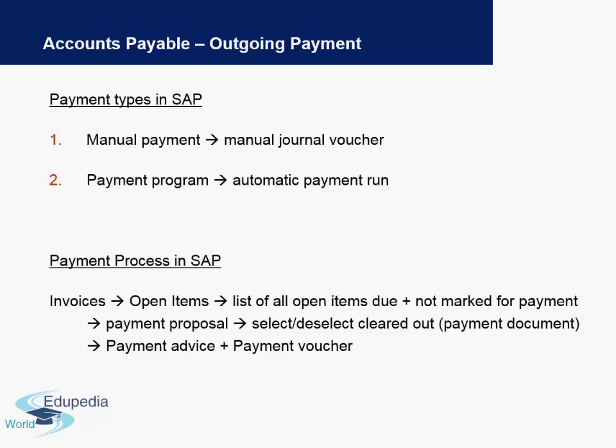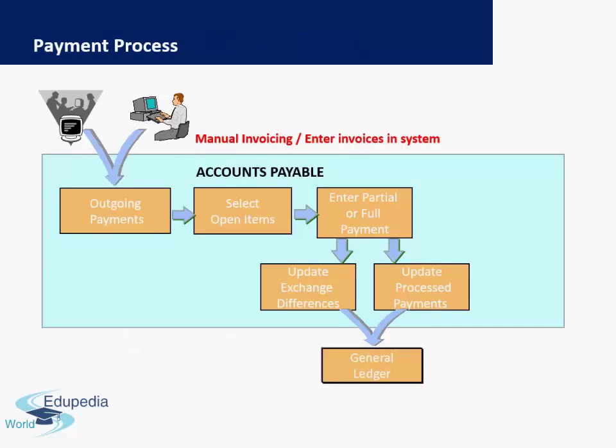When invoices are already posted, these become open items, as seen in earlier videos while viewing the vendor list display. The list of open items which are due and not marked for payment convert into a payment proposal. Here you get the option of selecting or deselecting specific documents to pay, and finally a payment invoice and payment voucher are created. This is a summarized payment process, which will be covered in detail in the next slides.